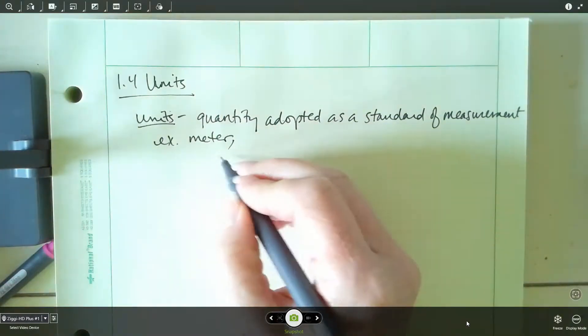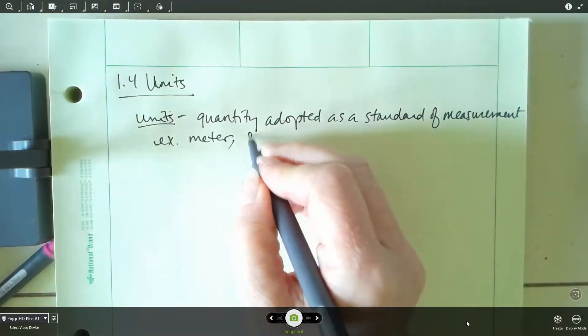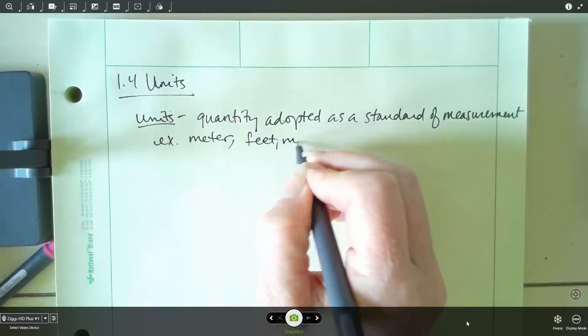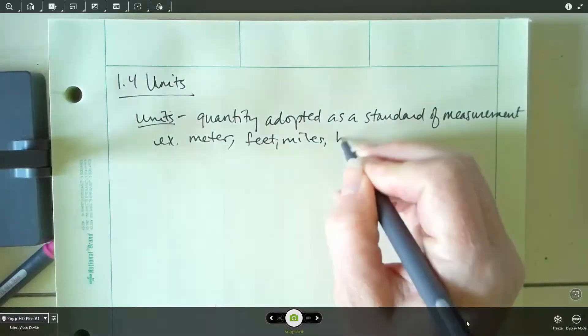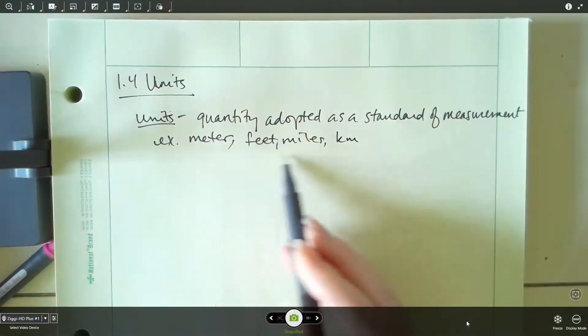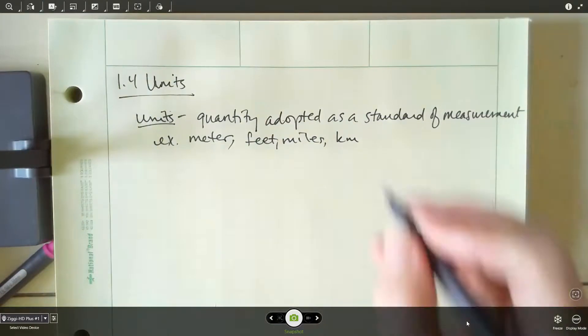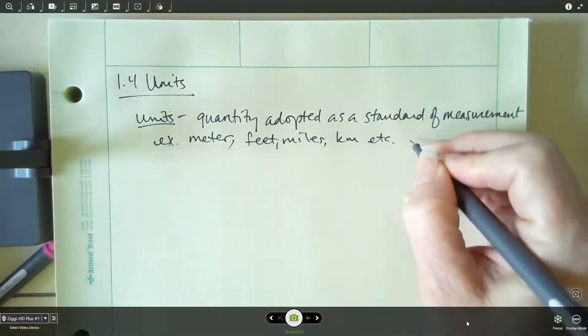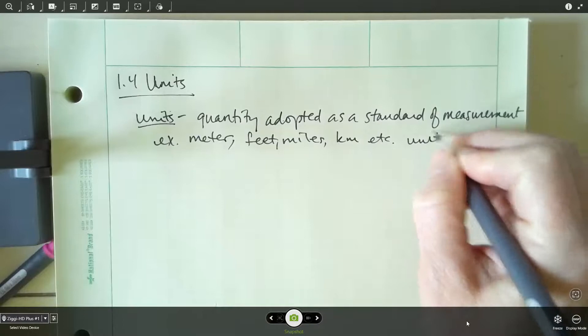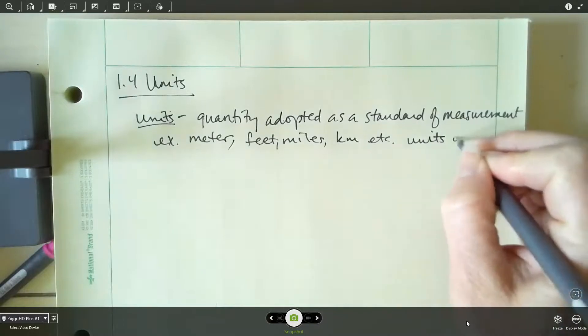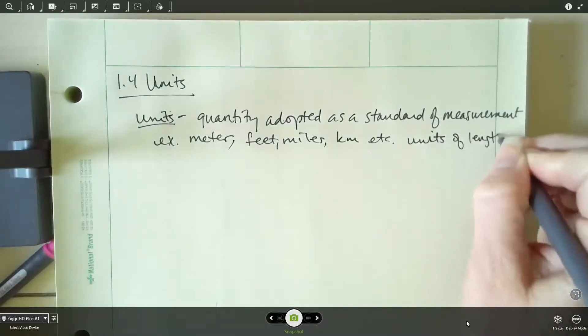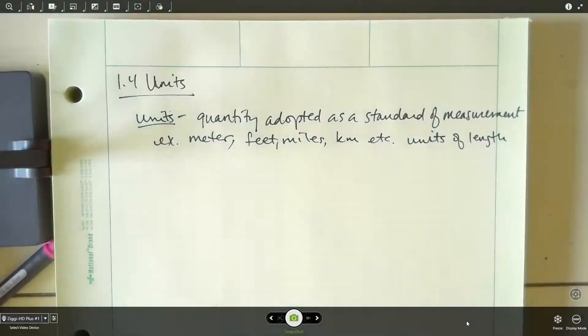For example, so here we've got meter, and then let's put feet. We've got miles, kilometers. Now, if you look here, these are all units of what? They're all units of length, right? So you have similar things for other quantities. So we'll cover temperature and pressure, some other things as we go through the class.